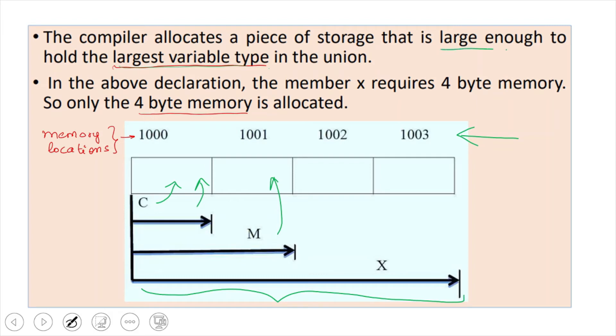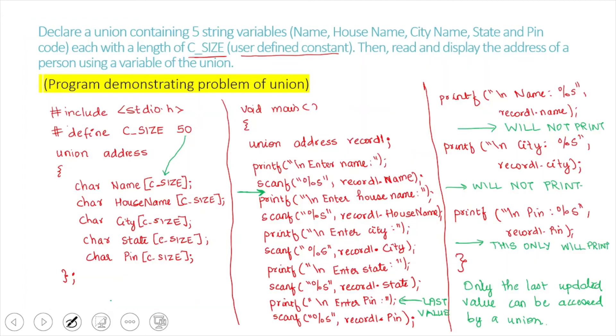So, the largest space will be that for the largest variable. Suppose if M was the largest variable, then only two bytes will be reserved. So, the problem of union is that we can write the program the same way as how we write that of a structure. But remember that instead of the keyword structure, we will be using the keyword union. And remaining everything is in the same way.